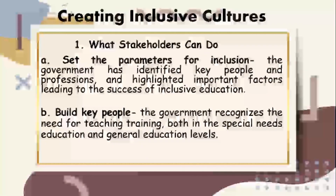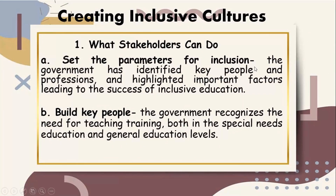Number one: set the parameters for inclusion. The government has identified key people and professions and highlighted important factors leading to the success of inclusive education — for example, placement process, committees, staffing and responsibilities, teacher training and compensation, incentives for private sector participation, and collaboration of the Department of Education with other branches of government. This clearly shows not just an attempt to centralize inclusive practices, but an initiative to make the welfare and development of children with additional needs the responsibility of all, consistent with what UNESCO pushes for in terms of getting every stakeholder involved.